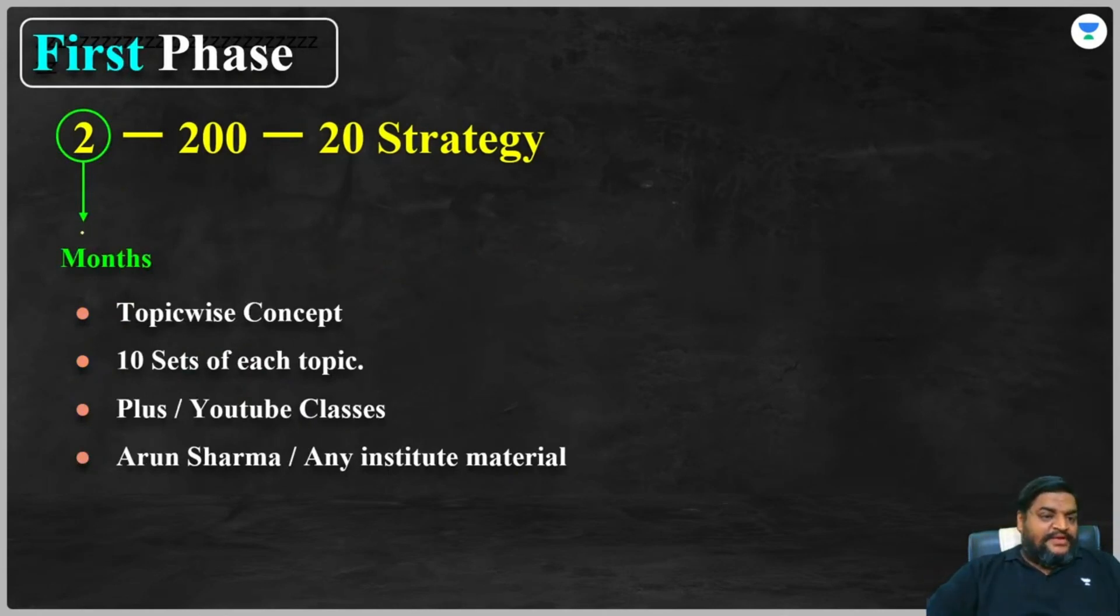Two represents number of months wherein you will cover topic-wise concepts. This is the first phase. You will cover topic-wise syllabus and you only have to cover 10 sets in each topic. First two represents number of months wherein you will cover topic-wise concepts, 10 sets on each topic.